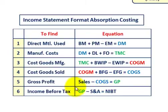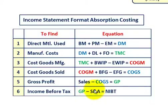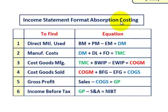Sixth, we determine income before taxes: take gross profit and subtract all selling and administrative expenses — both fixed and variable portions — to arrive at net income before taxes. That is the income statement format for absorption costing — a six-step process.